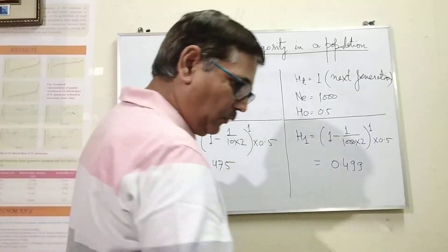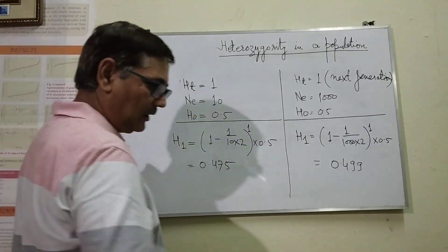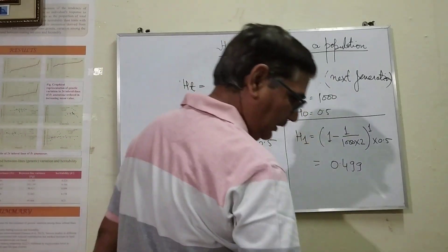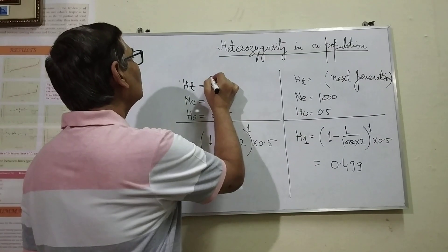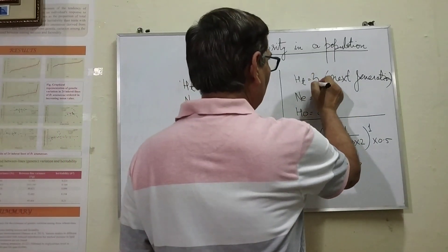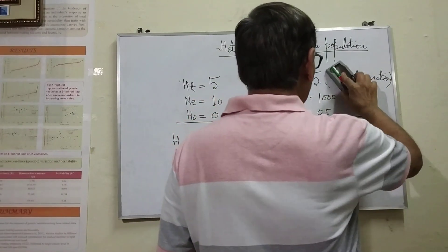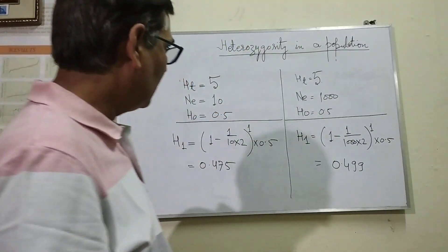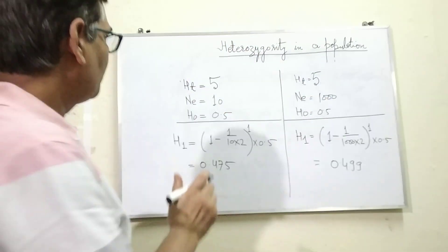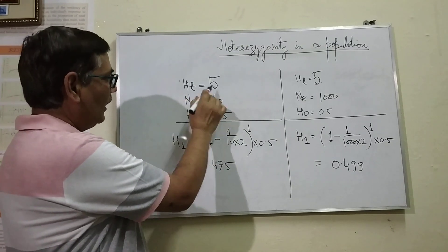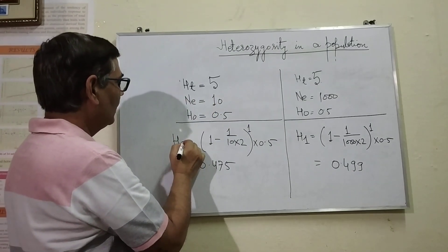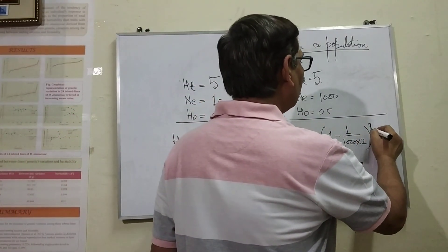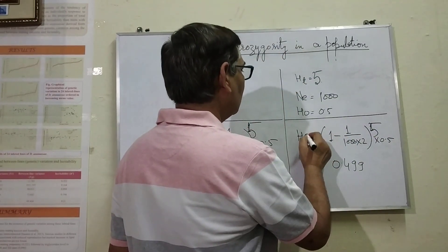The same thing we can study by considering the 5th generation — what could be the change in the 5th generation? If similar conditions prevail and we have to see what is happening in the 5th generation: initially the frequency of heterozygotes is 0.5, 10 individuals are there, and we are going to study heterozygotes in the 5th generation — so this will be to the power 5.